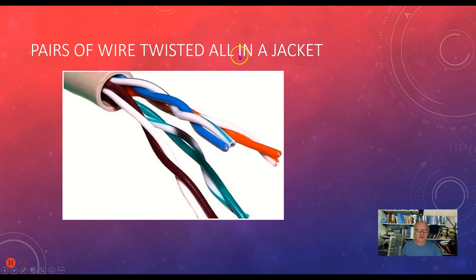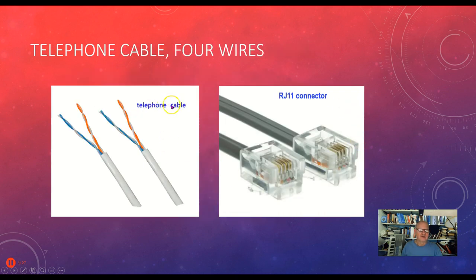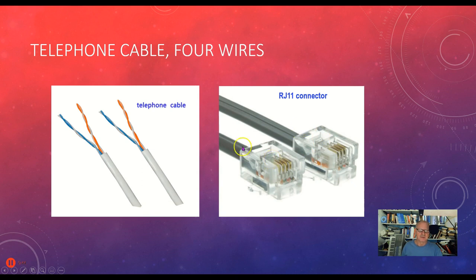This is what twisted pair cable looks like. I've got various pairs of cables twisted together, all enclosed in a jacket like that. This is telephone cable, and as you can see I've only got two pairs going through here, with a connector called an RJ11 connector. There are four wires total, so you only have four connections here — a little bit smaller than the network connectors you might be used to seeing.